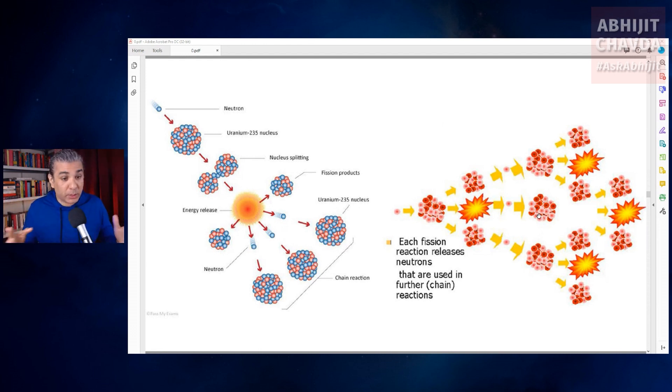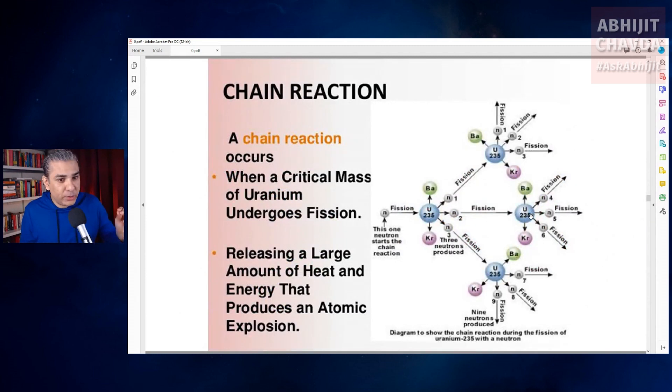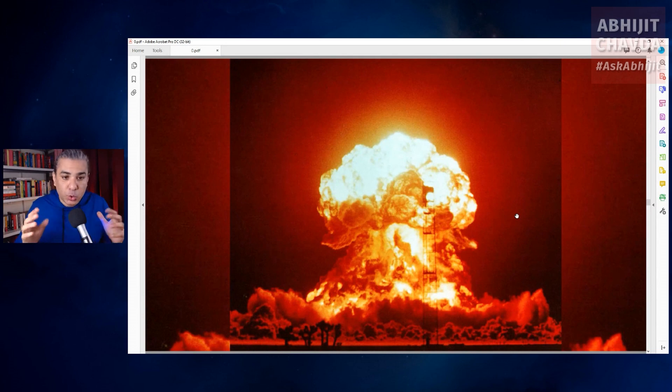This process continues until all the uranium atoms undergo fission and this releases an enormous amount of heat. In a chain reaction, the critical mass is the minimum mass of fissionable material required to sustain a fission chain reaction. When you have a runaway, uncontrolled chain reaction, that results in an explosive release of an enormous amount of energy and radiation in the form of a nuclear explosion.